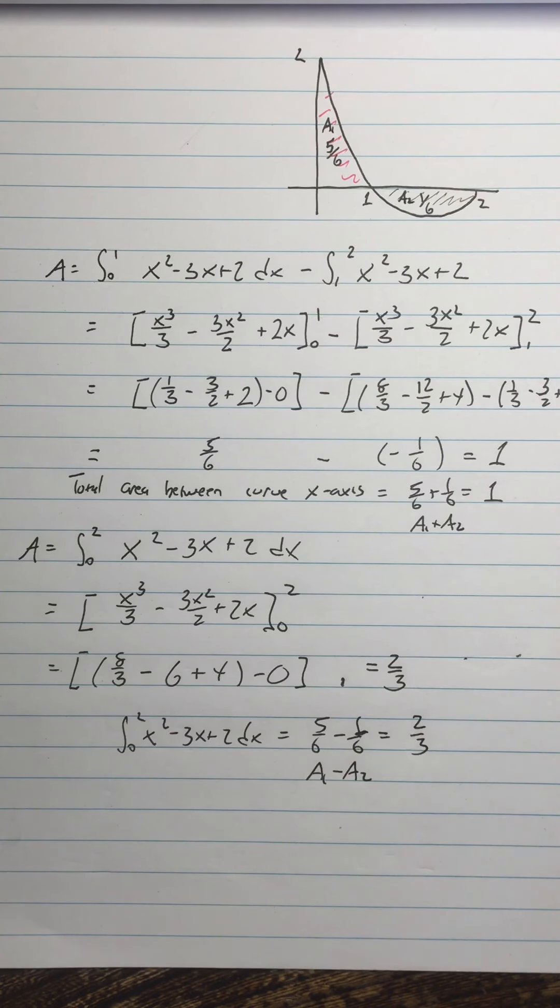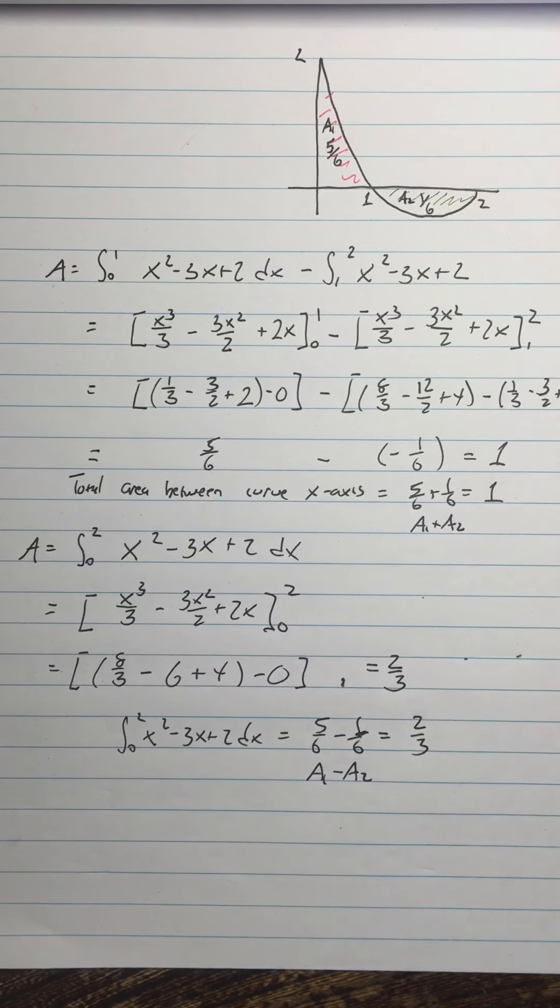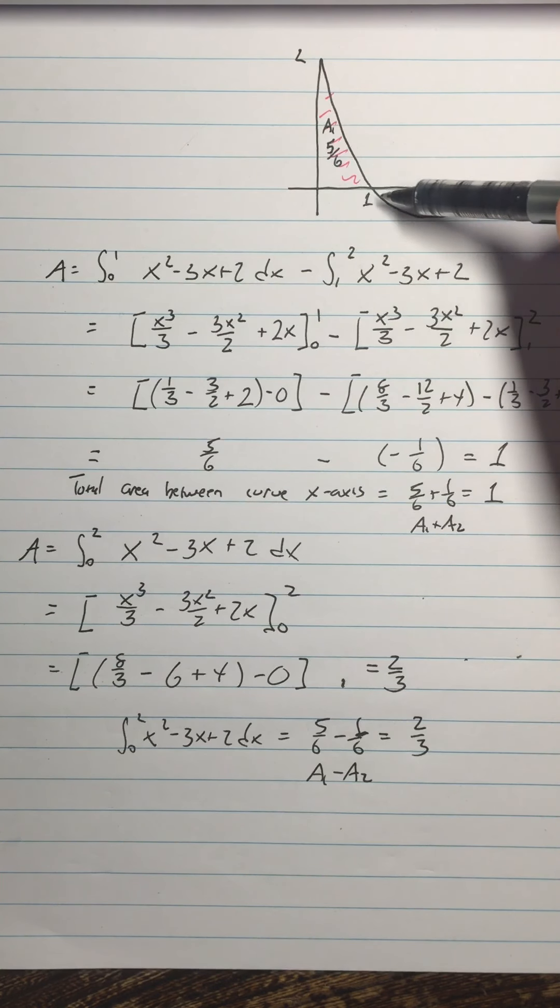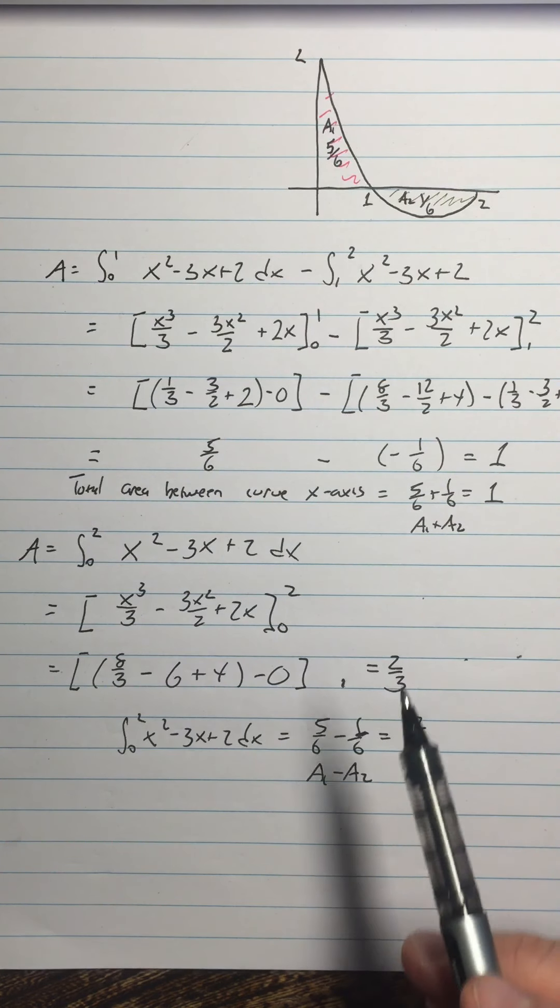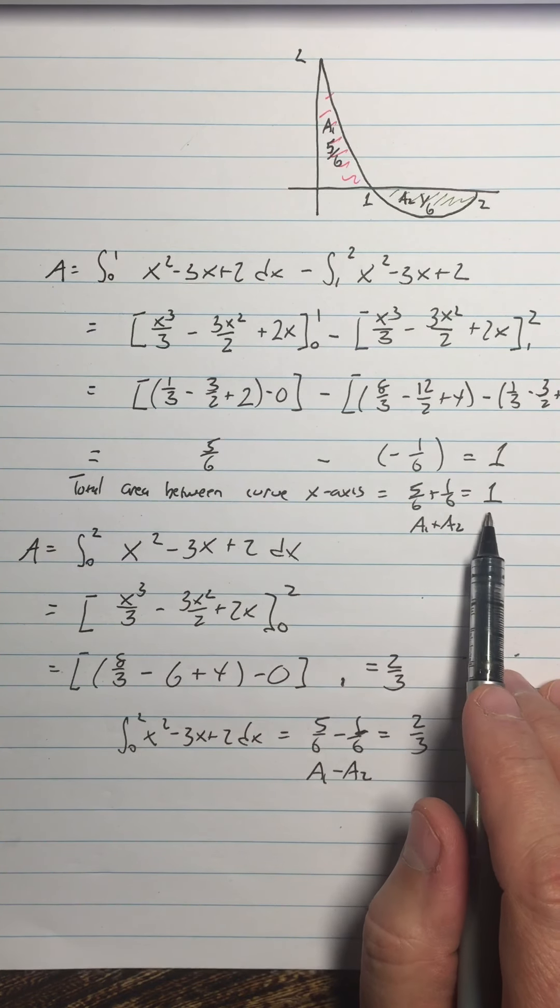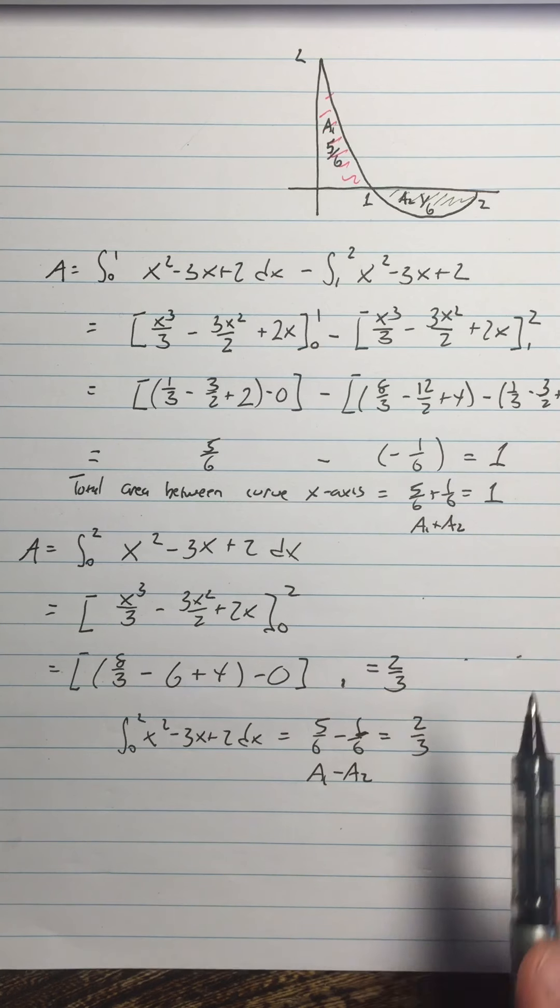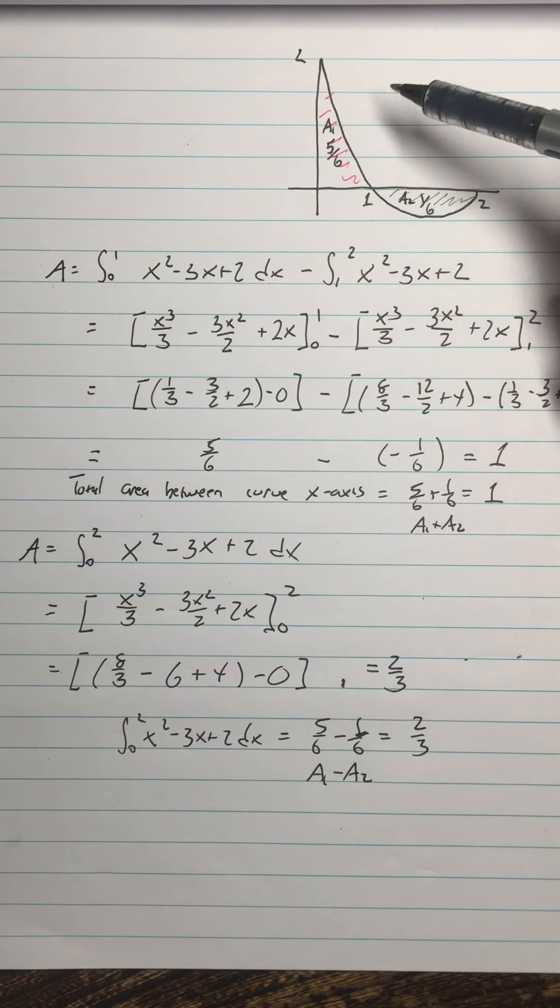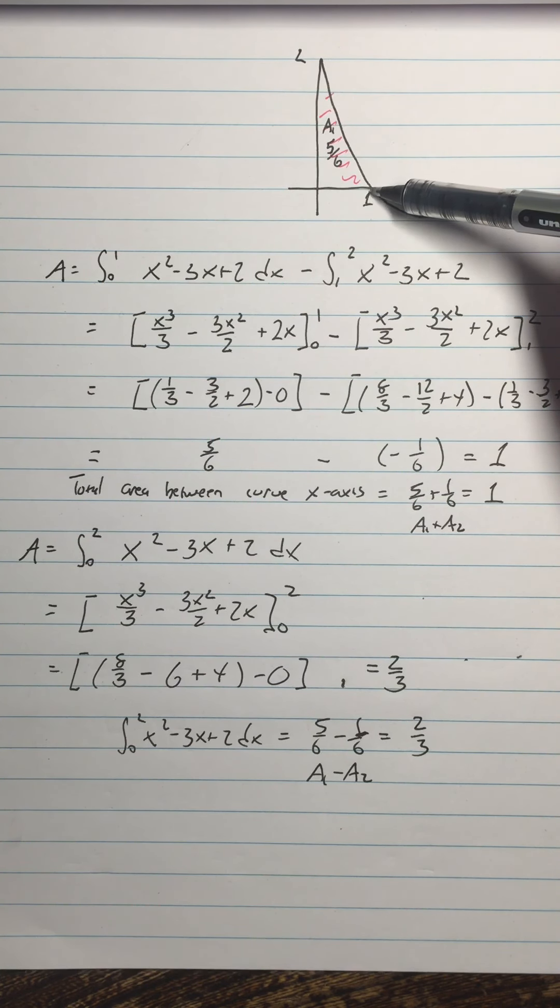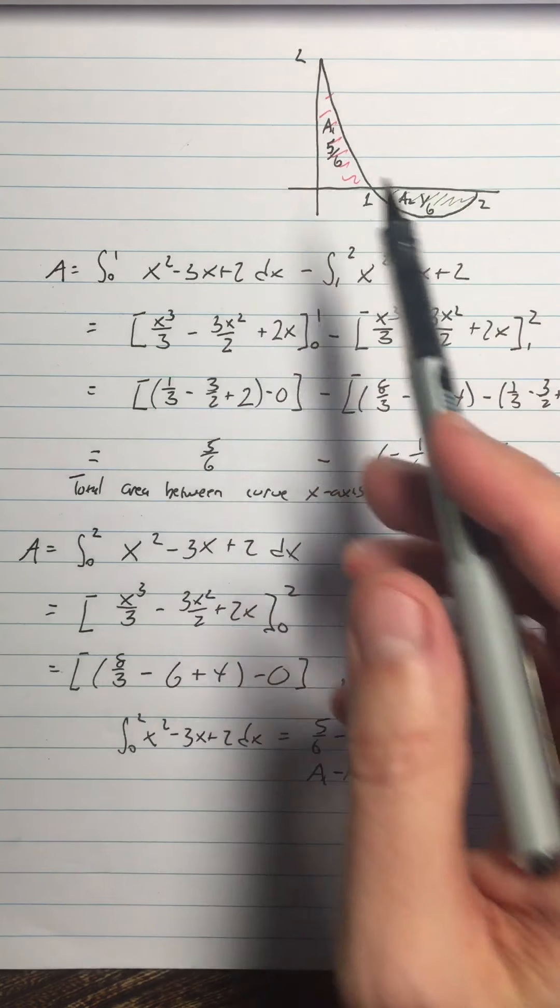So another important application that we're going to look at later is if I consider all the areas positive, and let's say this is a velocity curve, then what I would get here is the total distance traveled. But what I would get here is the displacement. So if this is a velocity curve, I have something that's moving to the right, and then as soon as the velocity becomes negative, then the object's moving back to the left.